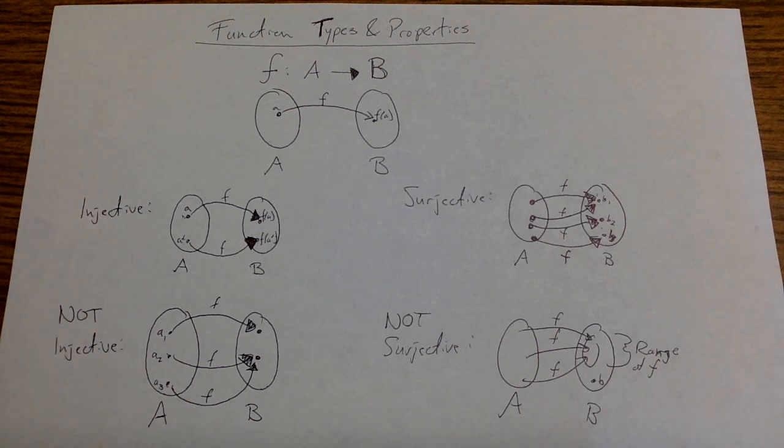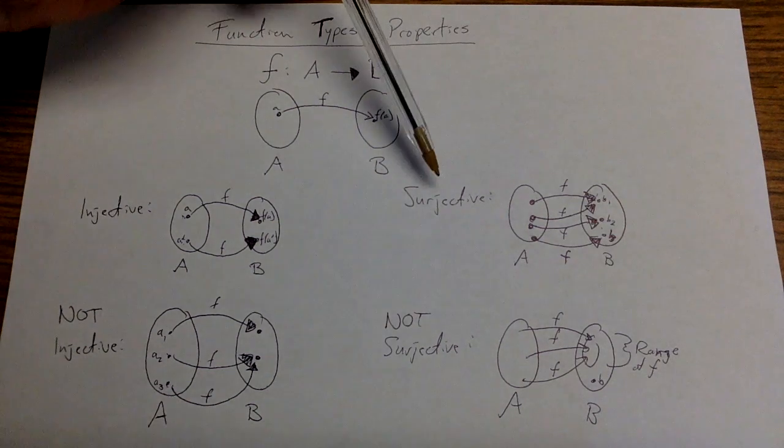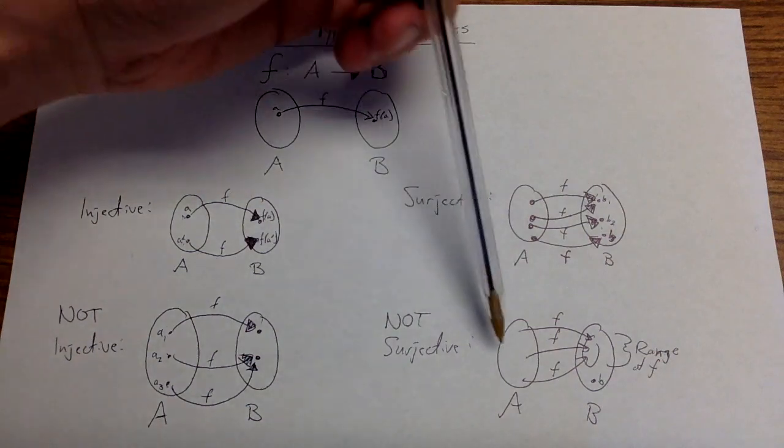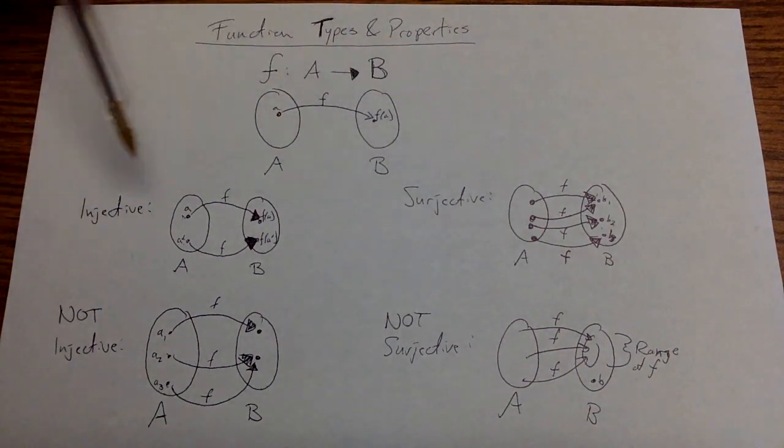Now I can have any combination of being injective or surjective, or non-injective surjective, or injective and non-surjective. But when I'm both injective and surjective, that means that I'm bijective.